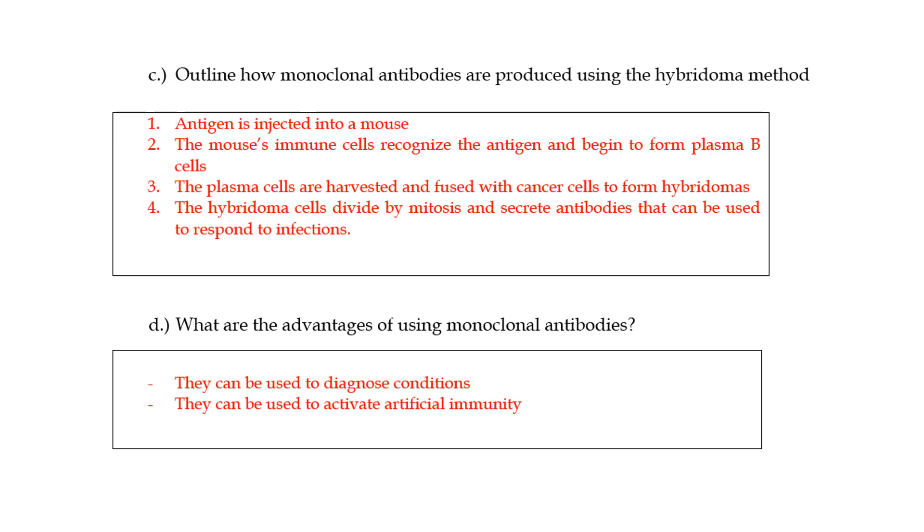I have a question here about monoclonal antibodies. I'm not going to go into detail about this because I'm pretty sure you know this is just a process. You inject it into a mouse, the mouse recognizes the antigen, it makes the B cells, the B cells are fused with cancer cells to form hybridomas. This is how monoclonal antibodies are prepared.